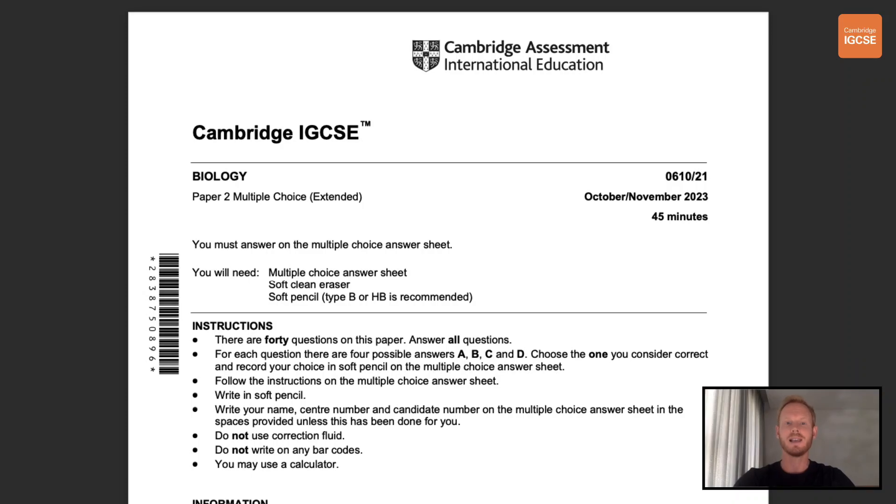Hello and welcome to another complete Cambridge IGCSE biology lesson. In this one we'll be breaking down paper 21, one of the extended multiple choice papers from the 2023 October November exam series. Before we begin it would be greatly appreciated if you'd take a moment to give the video a thumbs up and subscribe to the channel if you haven't already done so. Also, if you're going to be attempting this paper with me, keep track of your score because I'll be putting up the grade boundaries at the end of the video.